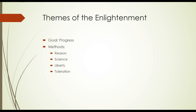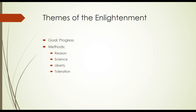They considered reason, science, liberty, and toleration to be the goals. I suggest writing those down because we're going to compare what we learn about the philosophes with these ideas. Sometimes they are going to practice what they preach, and sometimes they are not. In order to get those complexity points on the test, you want to show examples where they did what they said, or sometimes not so much.